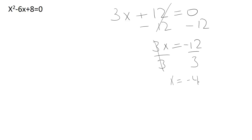That equation is very easy to solve because we have just one single variable and we don't have any squares or cubes — we just have an x. So it's easy to follow the steps to isolate that x.